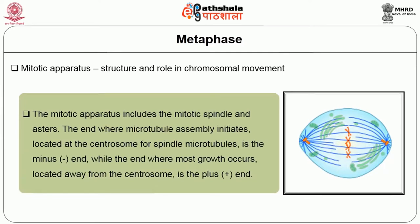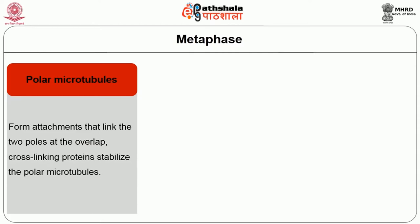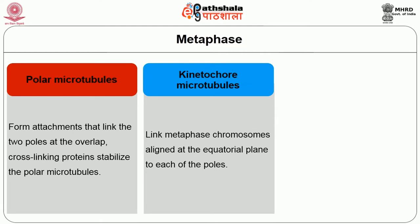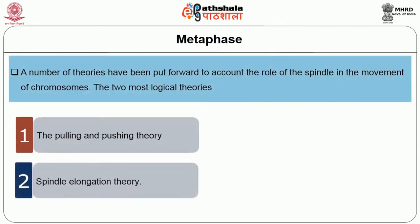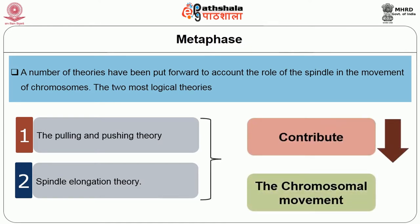The mitotic apparatus includes the mitotic spindle and asters. The minus end, where microtubule assembly initiates, is located at the centrosome; the plus end, where most growth occurs, is located away from the centrosome. In the mitotic spindle, three classes of microtubules have been recognized: polar microtubules, kinetochore microtubules and astral microtubules. Polar microtubules link the two poles at the overlap; cross-linking proteins stabilize them. Kinetochore microtubules link metaphase chromosomes at the equatorial plane to each pole. Astral microtubules radiate from each pole in all directions. Two theories account for chromosomal movement: the pulling and pushing theory and the spindle elongation theory.